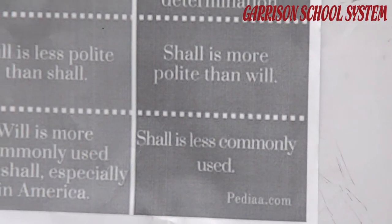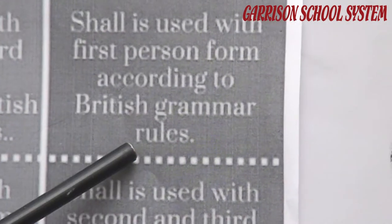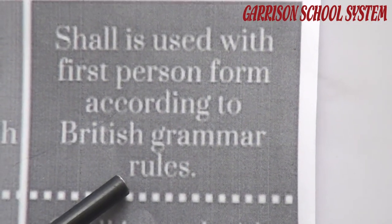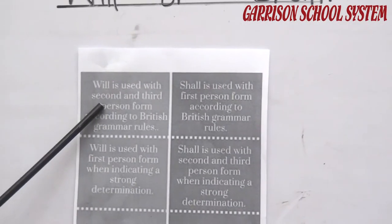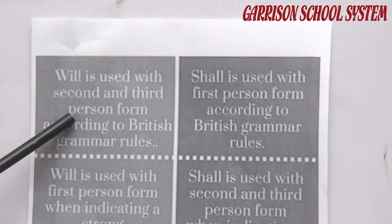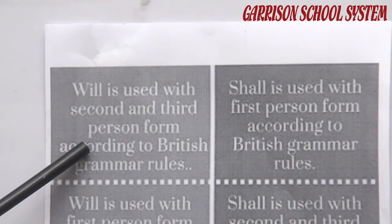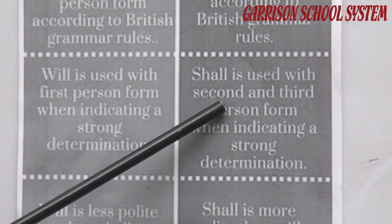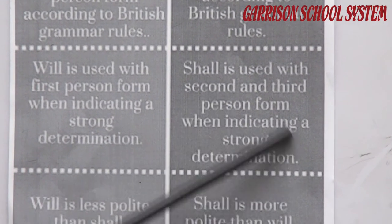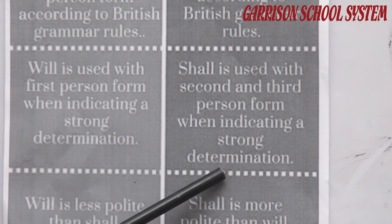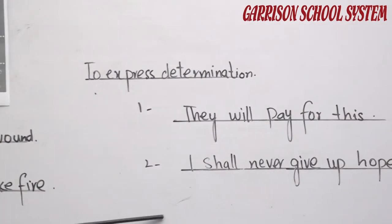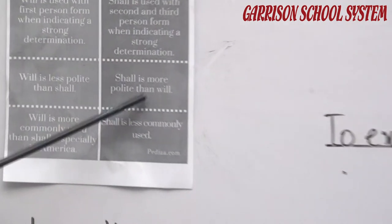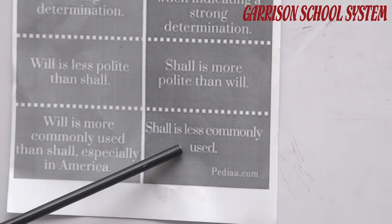Shall is used with the first person form — I and we — according to British grammar rules, while will is used with he, she, it, and they. Shall is used with the second and third person form when indicating strong determination. For example, 'I shall never give up hope' — this shows a strong determination of the person. Shall is more polite than will, and shall is less commonly used. We mostly use will with all pronouns.